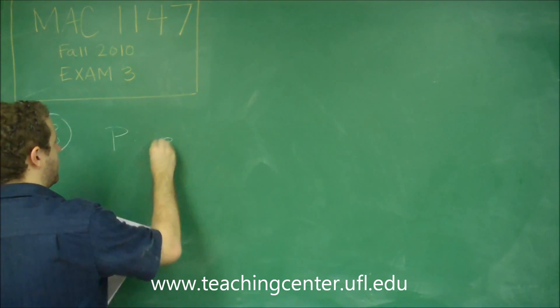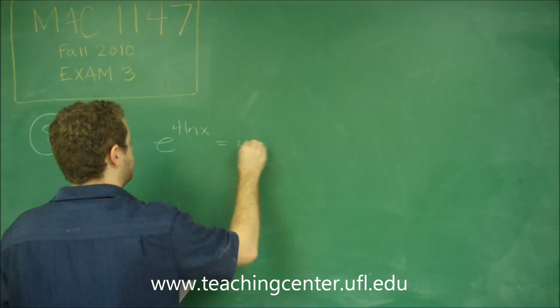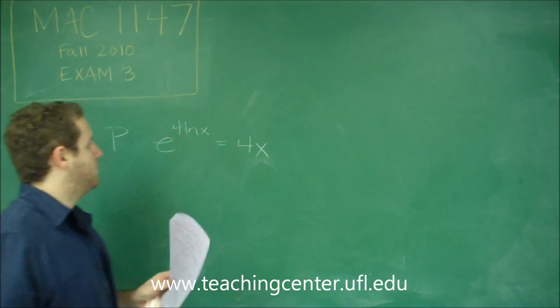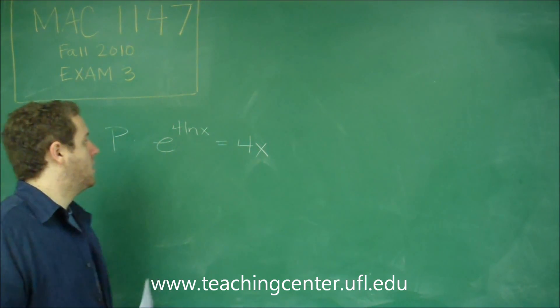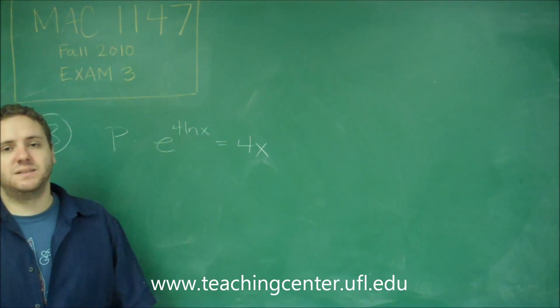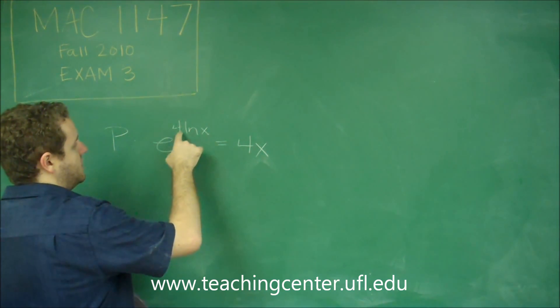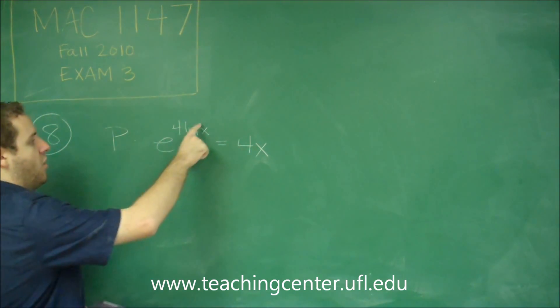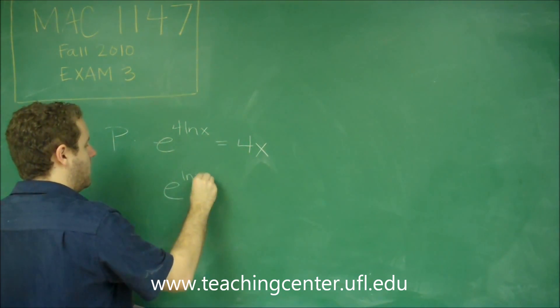So statement P says E to the 4LNX is equal to 4X. We're just supposed to see whether that's true or not. Well, the only way that you can cancel out things is if you have E to the LN of something. That is a way of canceling that out. Now, if you have a coefficient in front, you actually have to move that into the LN before you can do anything like that. So remember that if you have a coefficient in front of an LN, that's equivalent to a power of the whole argument. Your argument of the LN is X. So this is the same thing as E to the LN of X to the 4.